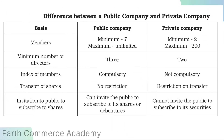Now let's compare public company with private company. On the basis of members, a public company requires a minimum of 7 members with no maximum limit. In case of a private company, a minimum of 2 members are required and the maximum limit is 200 members.